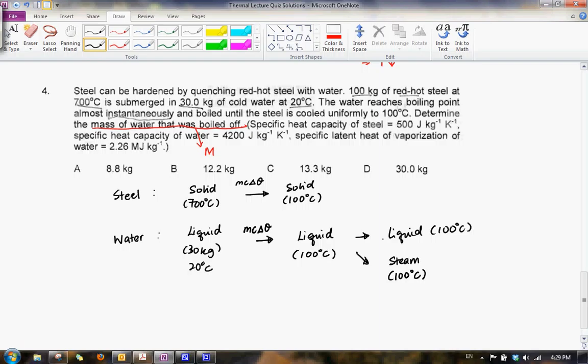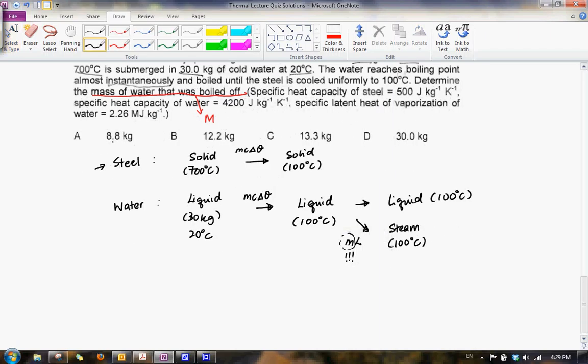And for the second part of the process, the heat required would actually be ML. But since not all is actually vaporized, so what we want to determine is actually this M. This is the mass of our interest. But overall what we can see is that the steel is actually losing heat and the water is actually gaining heat. So by conservation of energy, assuming that there is no other heat losses to the surrounding, and this is valid because it says that it's almost instantaneous, the process.